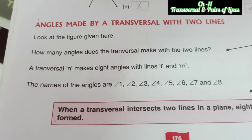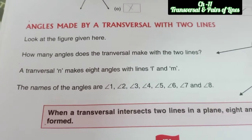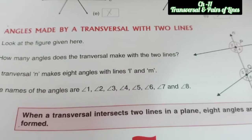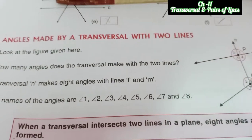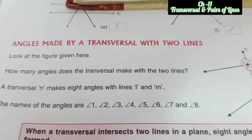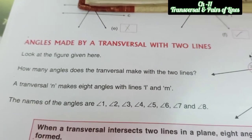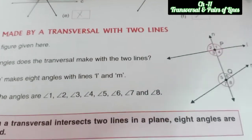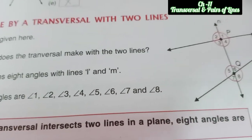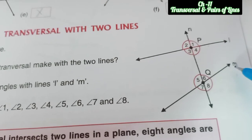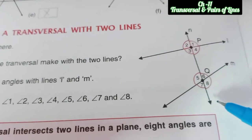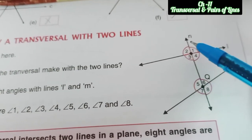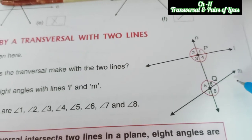Good morning students. In our previous work we know about the transversal. What is a transversal? A line which intersects two different lines or more than two different lines is called a transversal. In this figure, this is line L, this is line M, and line N cuts both the lines. Then N is the transversal of L and M.